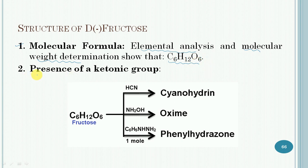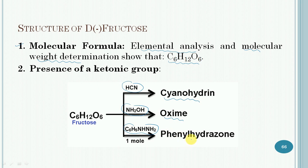Next is the presence of a ketonic group. From the various chemical reactions of fructose that we have studied: it reacts with hydrogen cyanide to give a cyanohydrin; it reacts with hydroxylamine to form an oxime; and it can also react with an equimolar quantity of phenylhydrazine to give a phenylhydrazone. These reactions show that fructose contains a ketonic group.